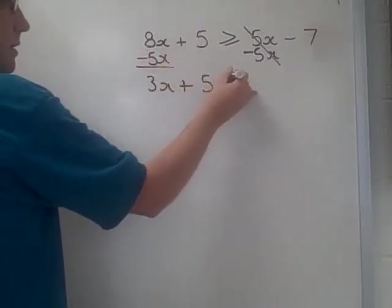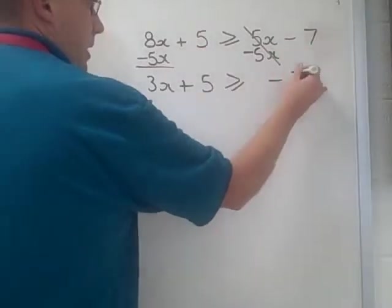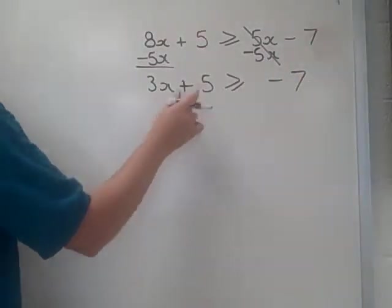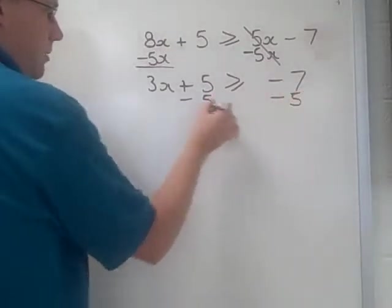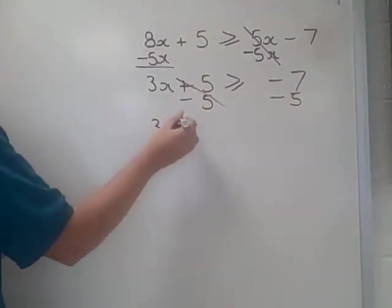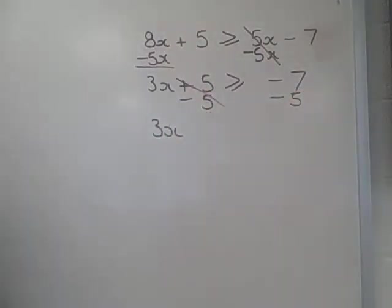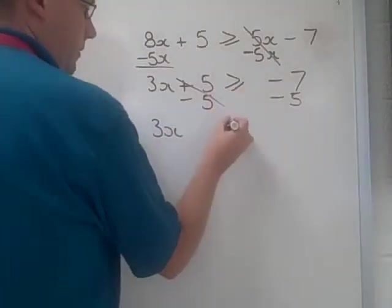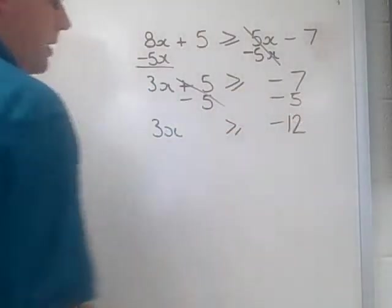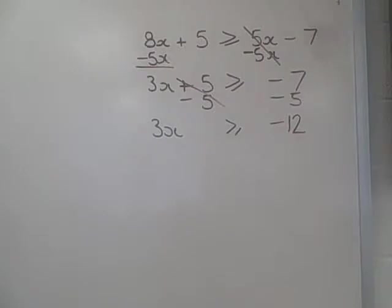Still got this plus 5 here, and negative 7. Now, I want to bring this positive 5 to the other side, so I'm going to do the opposite. Now, I've managed to isolate my x's on one side, and negative 7 take away 5 is negative 12, and I've managed to isolate my numbers on the other side.